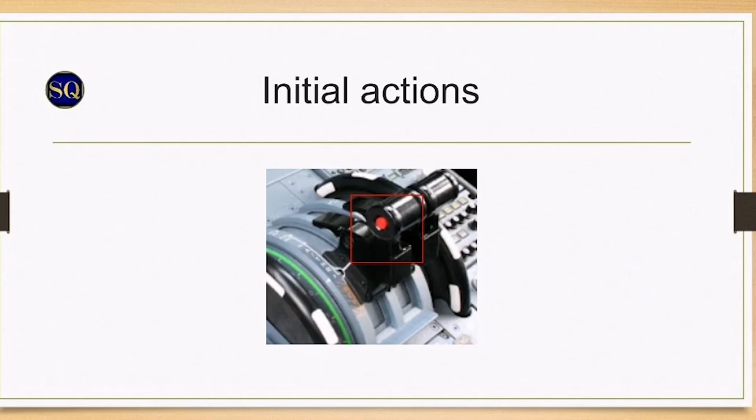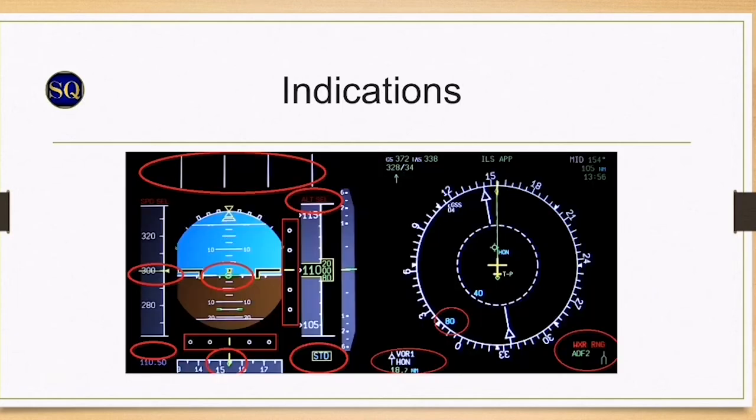The FMA indications are unavailable, altitude alert is lost, the barometer reference reverts to QNH 1013, speed select and Mach indications are lost, the flight directors are lost and flight path vector is displayed. Heading select is lost, the ILS scale is automatically displayed, the ILS can be tuned from the MCDU or RMP.